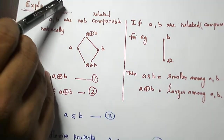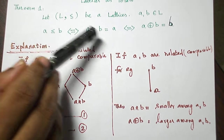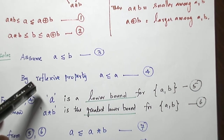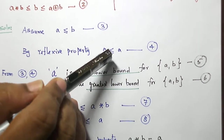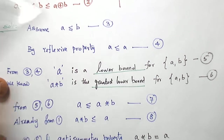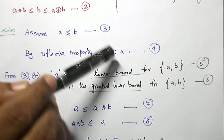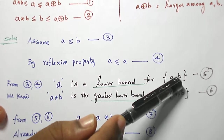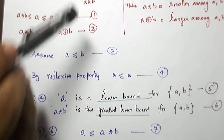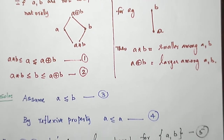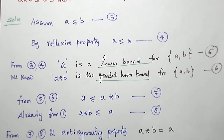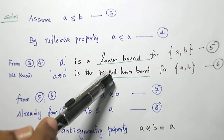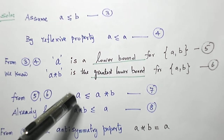Now let us prove this as a necessary and sufficient condition. First, assume A is related to B, i.e., A ≤ B. By the reflexive property we also have A ≤ A. Combining these two inequalities, A is a lower bound for the set {A, B}. And naturally A∧B is the greatest lower bound for {A, B} by definition. Combining these two statements, A∧B is greater and A is smaller, so the inequality A ≤ A∧B holds.